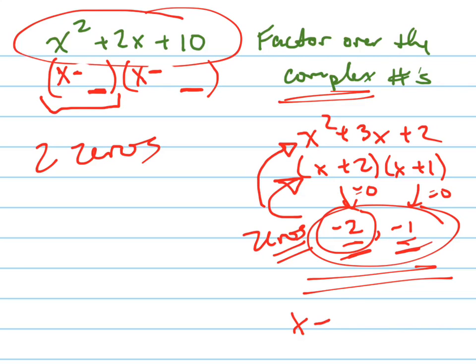Because if my zero is -2, then x minus a negative 2 is my factor. So again, if 5 is your zero, then x - 5 is your factor. Every zero is related to a factor. Every factor is related to a zero.